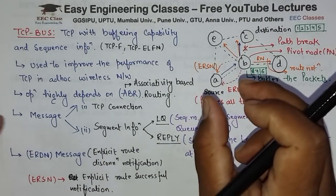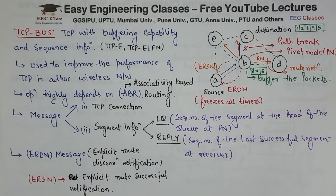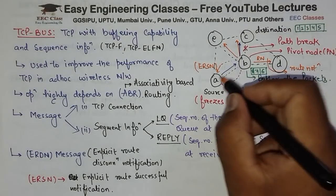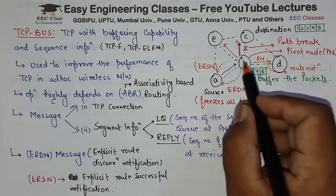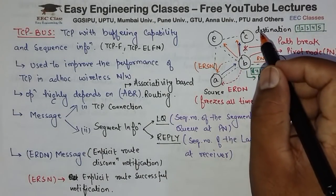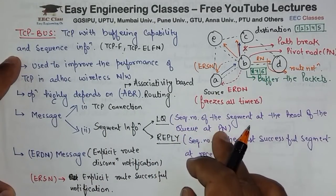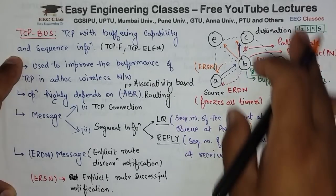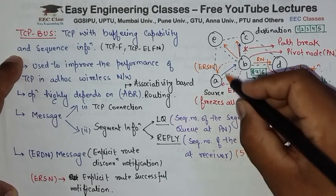A will know that there is a route via E to C. But A ko yeh nahi pata ki kahan se wapas packet bhejna shuru kare — kyunki B ke paas 8, 7, 6 hain aur destination ke paas 5 tak pahunch chuke hain. So A and B will exchange the LQ and Reply messages, jis se ki A ko pata lag jayega ki B ne 8 tak buffer kar ke rakha hai, aur destination pe 5 tak pahunch chuka hai. LQ kya bhejega — head of the segment at the queue at PN, yaani 8. Reply mein kya jayega — last successful segment, yaani 5.